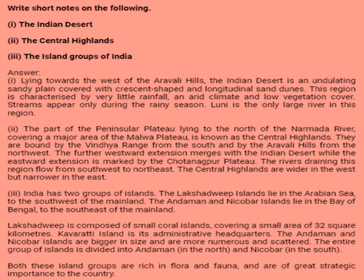Third, the Island Groups of India. India has two groups of islands. The Lakshadweep Islands lie in the Arabian Sea to the south-west of the mainland. The Andaman and Nicobar Islands lie in the Bay of Bengal to the south-east of the mainland. The Lakshadweep is composed of small coral islands covering a small area of 32 square kilometers; Kavaratti Island is its administrative headquarters. The Andaman and Nicobar Islands are bigger in size and more numerous and scattered, divided into Andaman in the north and Nicobar in the south. Both island groups are rich in flora and fauna and are of great strategic importance to the country.